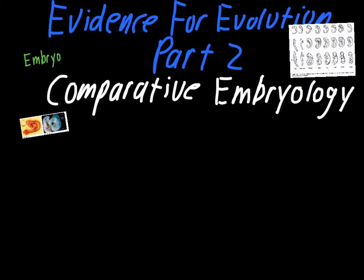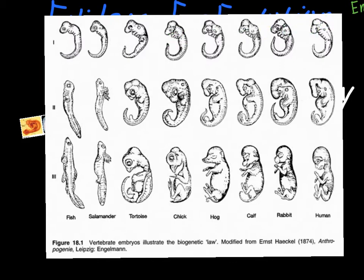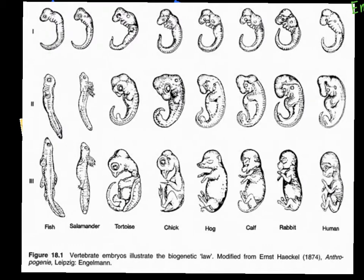Looking at a slightly more complex image involving multiple species — fish, salamanders, tortoises, developing chicken, developing pig, cow, rabbit, and human — across three different stages of embryological development. Everything is pretty indiscernible at the first stage. You can see the distinct tail and distinct eye structures. We talked about the pharyngeal pouches, which almost look like little ribs sticking out of the embryo.